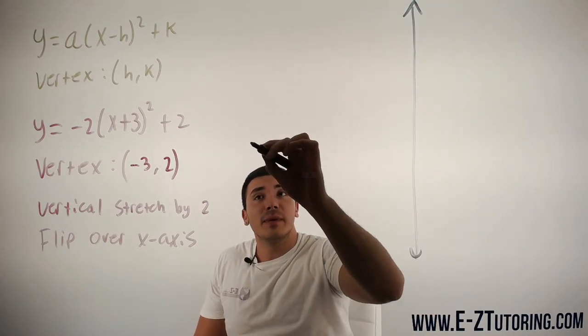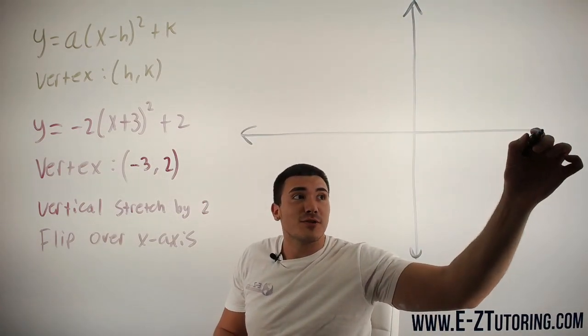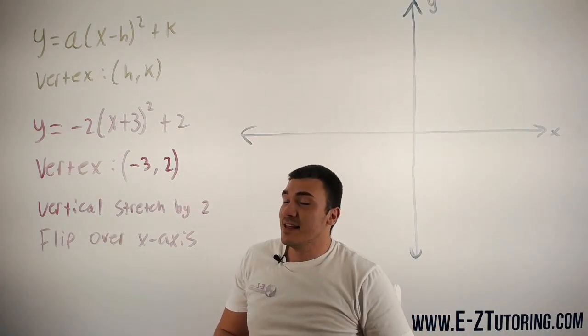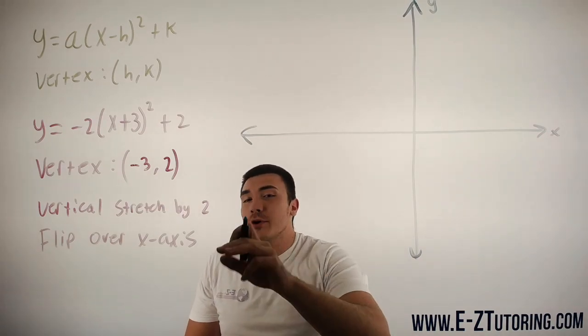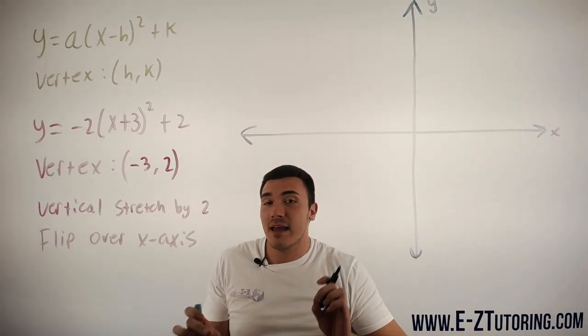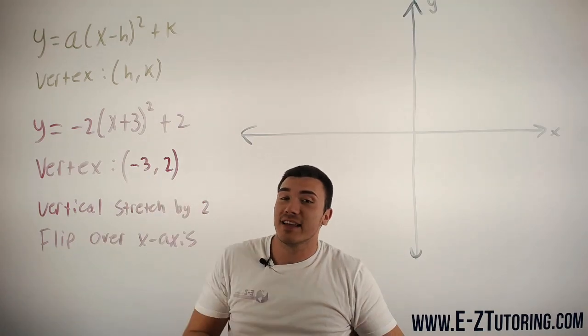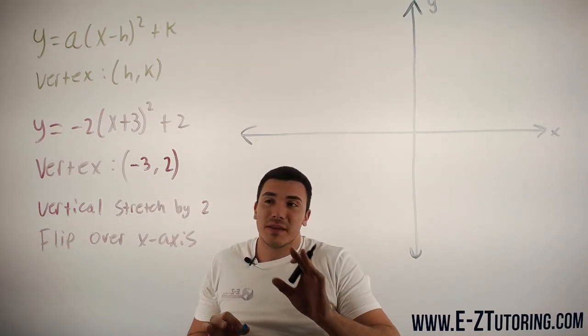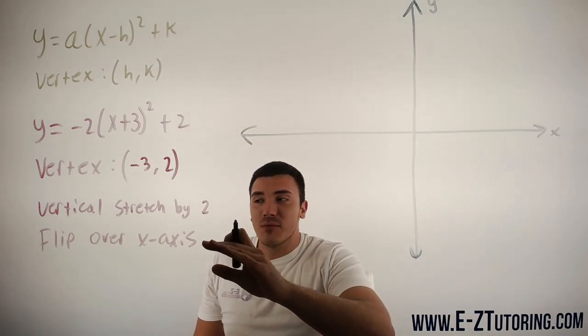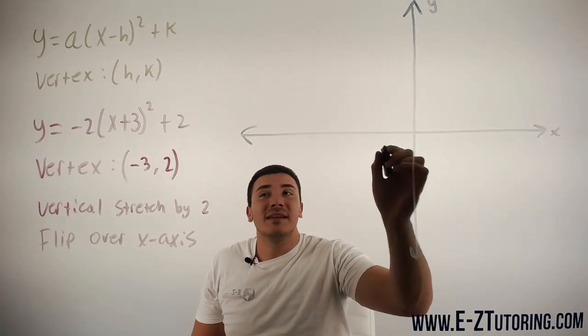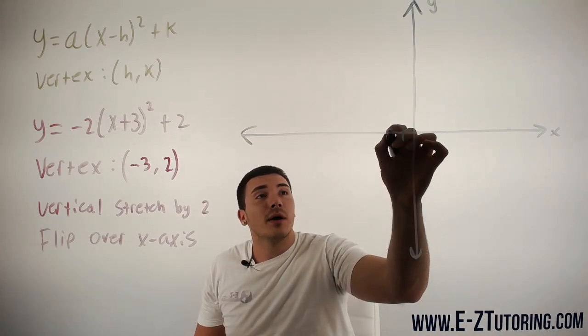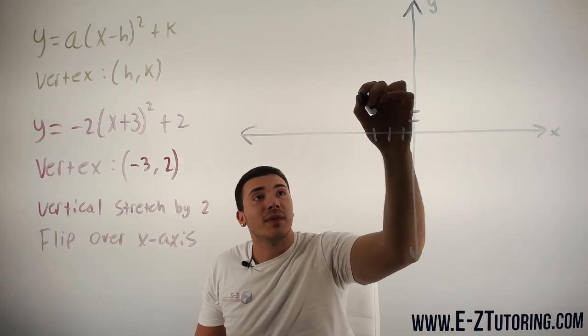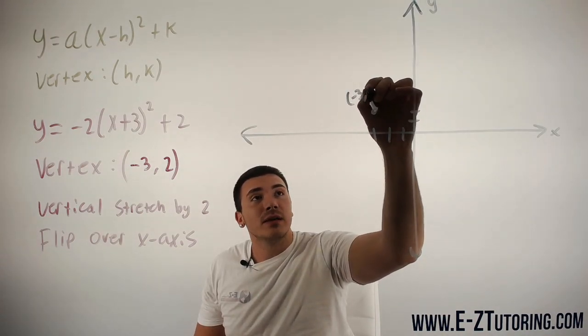So let's go ahead and see this in action and graph it. Now if you aren't familiar with graph transformations and you don't know what I'm talking about, then you can simply plug in two points to the left and to the right of the vertex and you'll be done. However, I'm going to teach it using the graph transformations method. So let's go ahead and do our vertex at negative 3 comma 2 right over there.